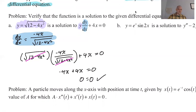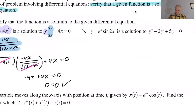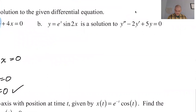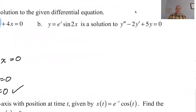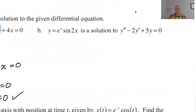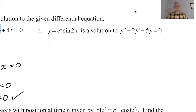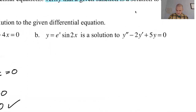If we had gotten something like 1 equals 0, it wouldn't have been a solution and we'd go back and check the derivative, since that was the trickiest part. Now let's check that y equals e to the x times sine of 2x is a solution to y double prime minus 2y prime plus 5y equals 0. The hardest part is going to be finding the second derivative correctly, because this is a product and we'll need the product rule — possibly twice. We already have y to substitute, but we need y prime and y double prime.